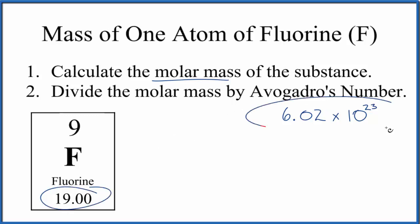And then we divide by Avogadro's number. You can think about this average atomic mass here as having the units of grams per mole. So for fluorine, we have 19.00 grams in one mole.